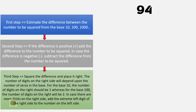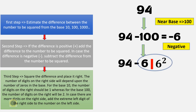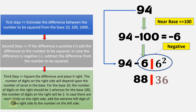Now consider the square of 94. The base nearer to 94 is 100. The difference is 94 minus 100, which equals minus 6. Since the difference is negative, subtract the difference from the number to be squared — this becomes the left part of the solution. Square the difference and place it on the right. Since the base is 100, there should be 2 digits on the right, which is satisfied here. Combining the numbers, the square of 94 is 8836.